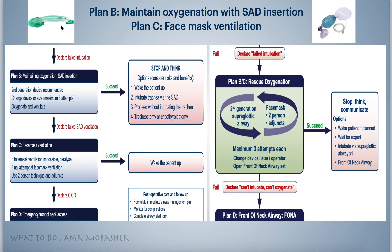If that option fails, we need rescue oxygenation via Plan C: face mask ventilation using the two-person technique, with airway adjuncts such as oropharyngeal or nasopharyngeal airways. If we succeed, keep giving face mask ventilations and reverse the anesthesia and muscle relaxant to wake the patient up. If we fail, declare CICO — can't intubate, can't oxygenate — without delay.